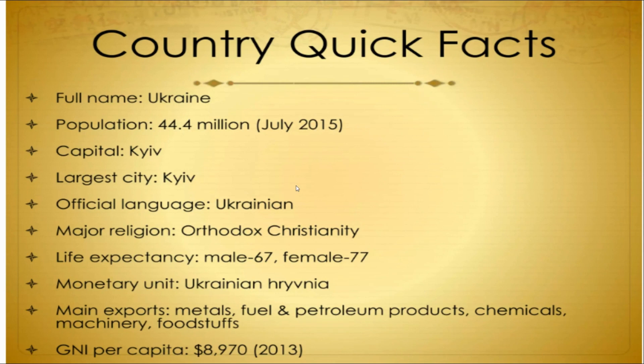Looking at the quick facts: the capital is Kyiv, and the population is around 45 million, though currently it is less than 40 million because when the war started many people migrated to Poland, Eastern Europe, or the US. The official language is Ukrainian, the major religion is Orthodox Christianity, and the currency is the hryvnia. Another important factor is Ukraine's many natural resources, including oil, metals, chemicals, and machinery.